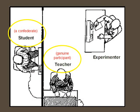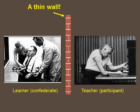A very thin wall separated the confederate learner and the genuine participant teacher. Interestingly, the experimenter was in the same room as the teacher — we'll get to why that's important later. The thin wall allowed the teacher to hear the so-called screams of the learner throughout the experiment.